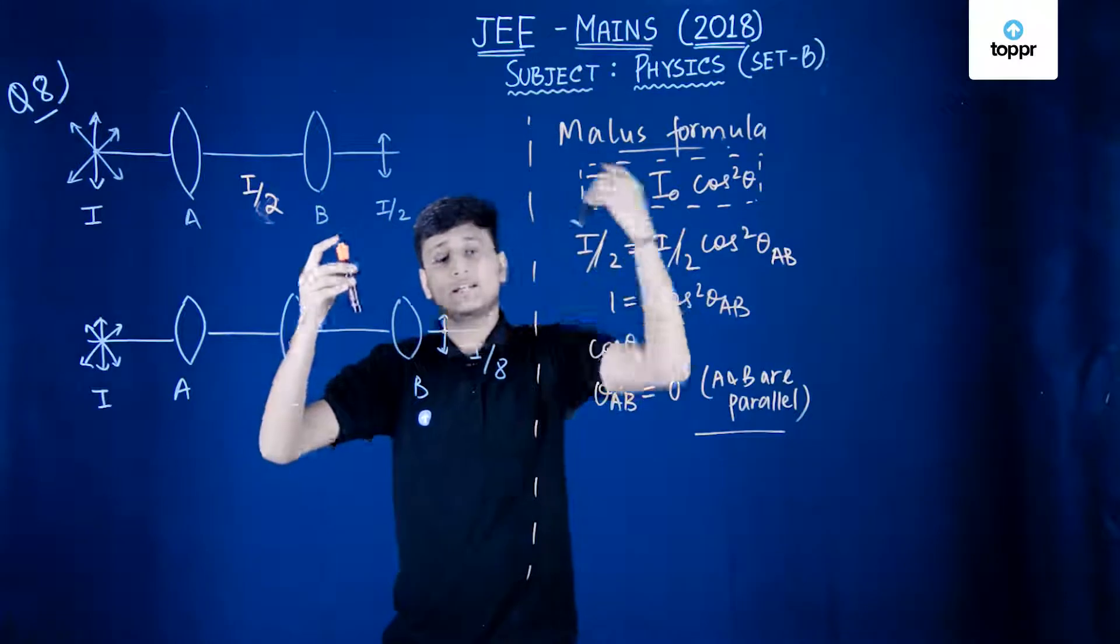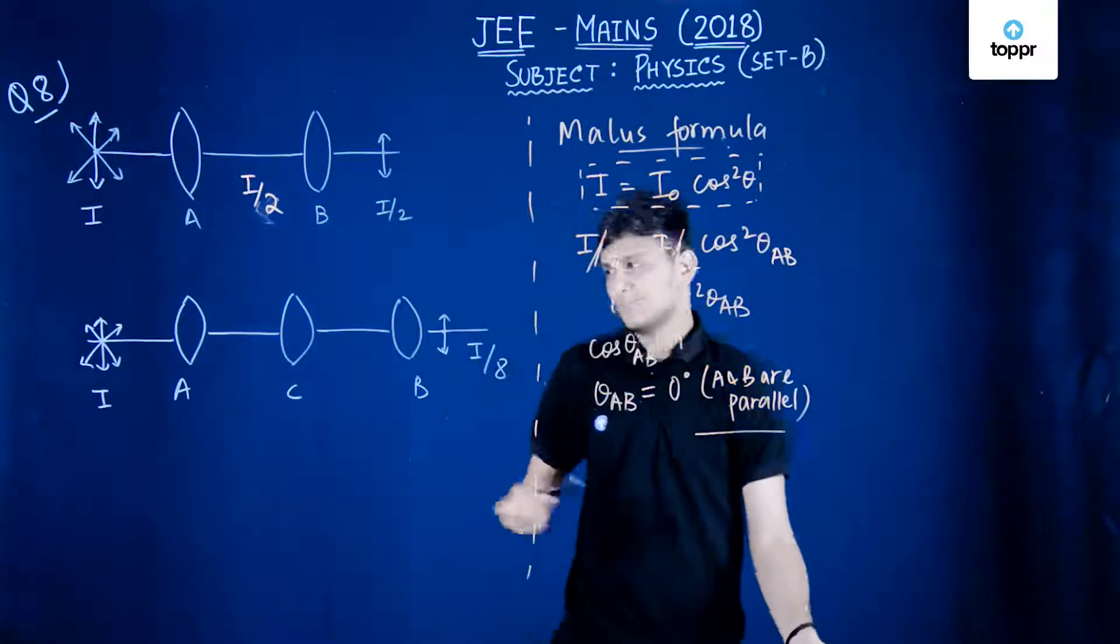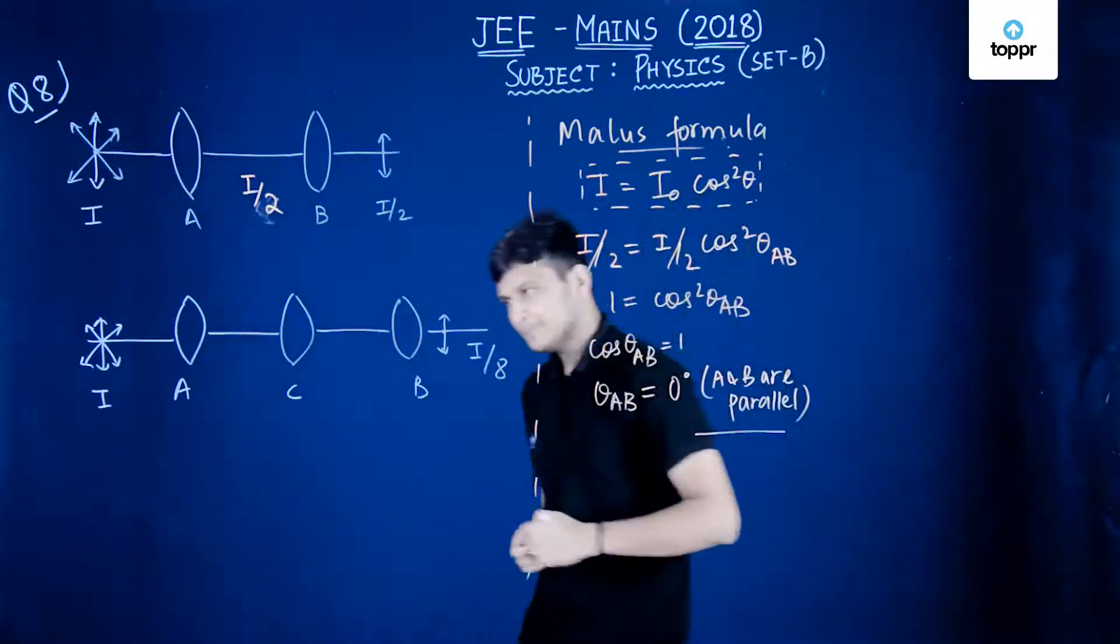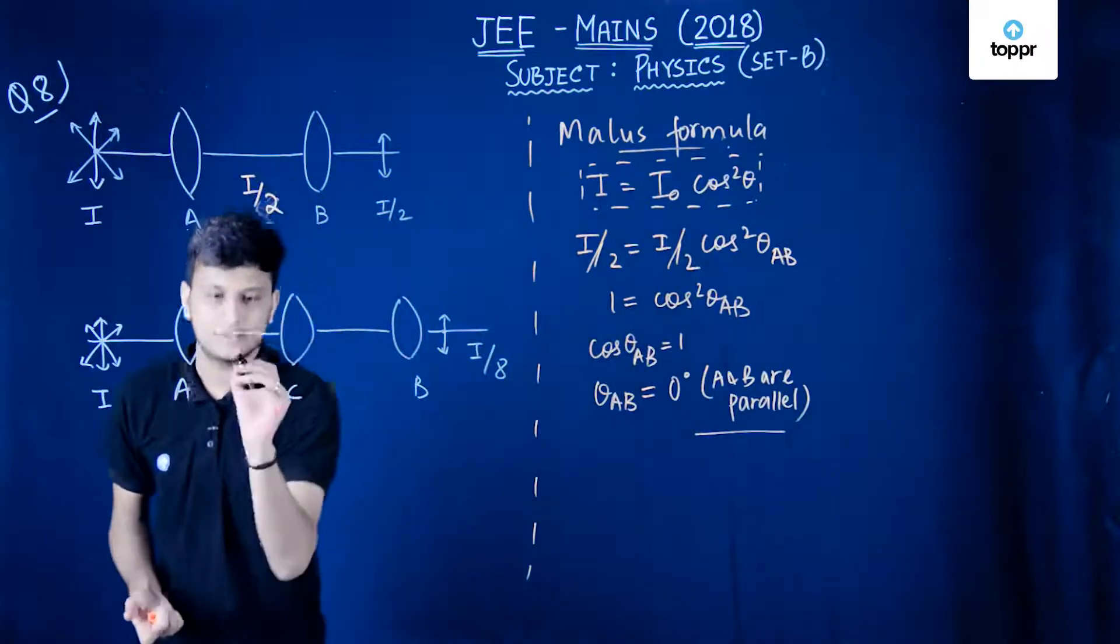Now we have introduced another polarizer C. Let's see what happens. Again we can see what will happen. First thing that we have noted is this would become I by 2.